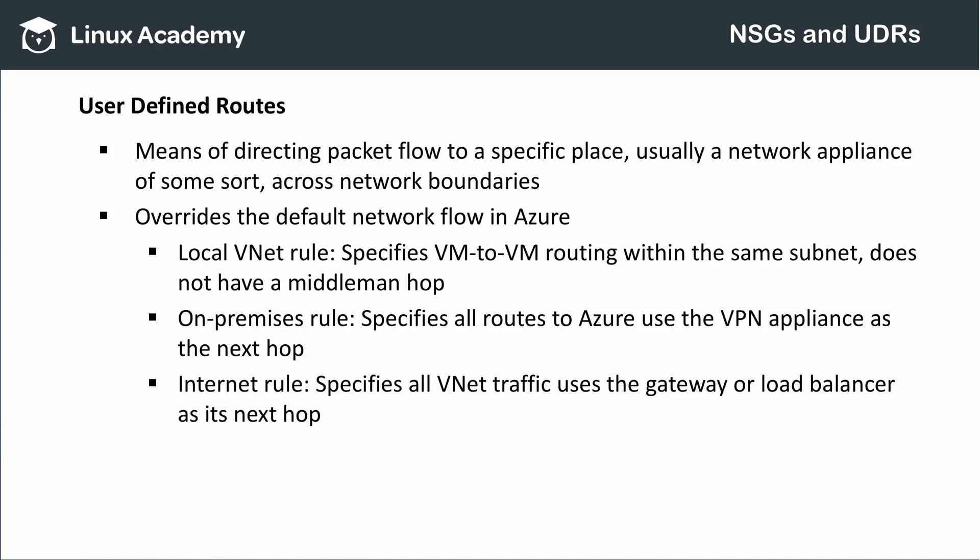User-defined routes are basically a way for you to override the default inter-network communication that Azure wires up for you automatically. For example, every time you create a subnet with two or more VMs in it, Azure automatically creates routing rules for those network resources. There's a local virtual network rule that allows direct VM-to-VM communication within a subnet with no intermediary hop. If this virtual network is part of a site-to-site VPN, a rule is automatically created that routes all traffic to and from your on-premises network through the VPN gateway.